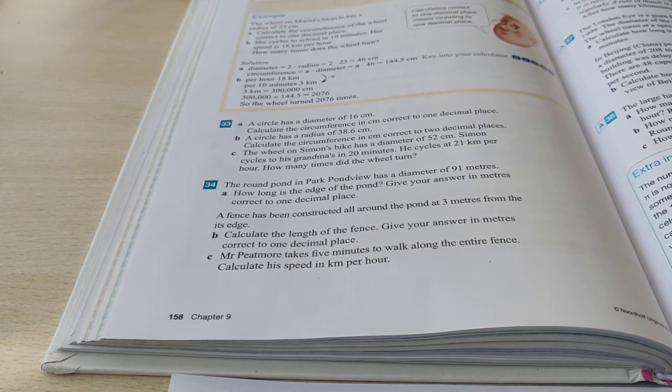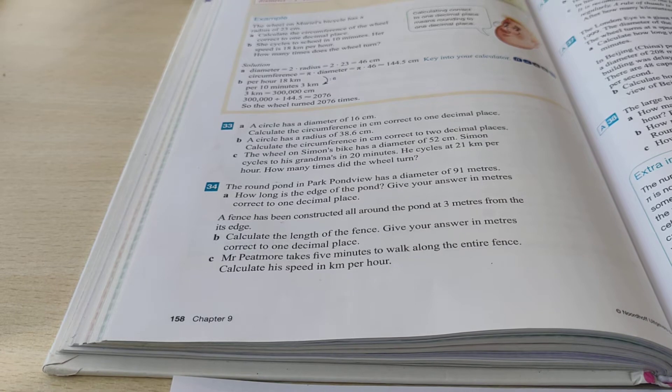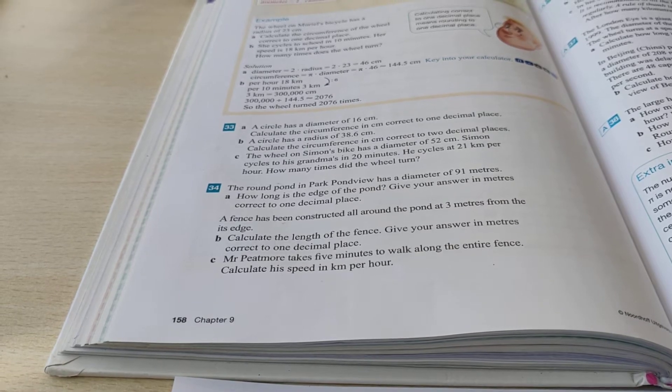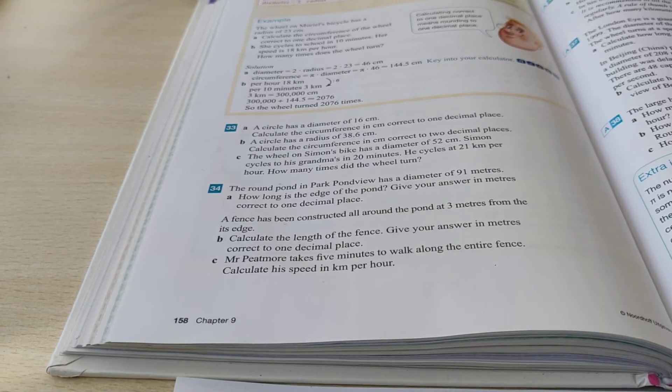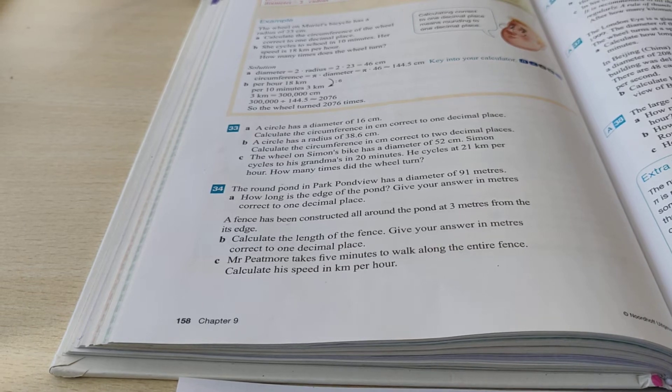This is a video for 1ST about exercise 34. The round pond in Park Pond View has a diameter of 91 meters. How long is the edge of the pond? Give your answer in meters.